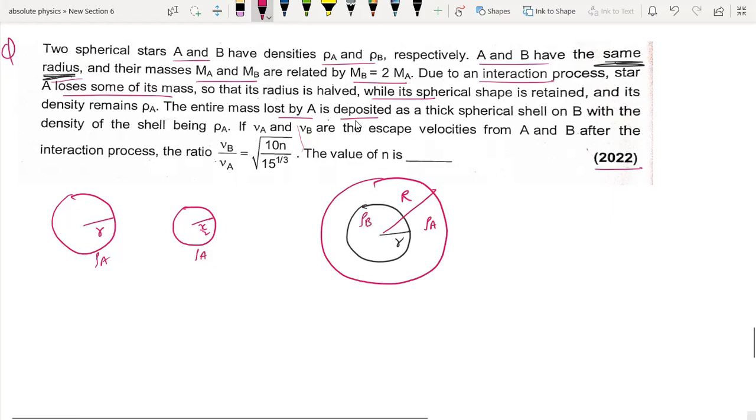If VA and VB are the escape velocities from A and B after the interaction process, we need to find the ratio.